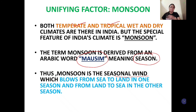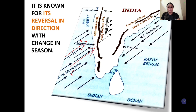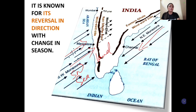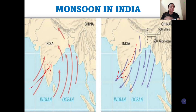Kisi ek season mein it blows from sea to land, aur doosre season mein it blows from land to sea, and it prevails for a very long time in India. Monsoon apne direction ko change karne ke liye jaana jaata hai. Ye hai southwest monsoon, jo southwest direction se India mein enter karta hai from sea to land. Aur wahi doosre season mein northeast monsoon bankar wo lautta hai from land to sea. So this is how it changes its direction with the change in season. If you see this map, is map mein clearly dikhaya gaya hai ki ye sea se land ki taraf badh raha hai, aur doosre season mein wo land se sea ki taraf badh raha hai.